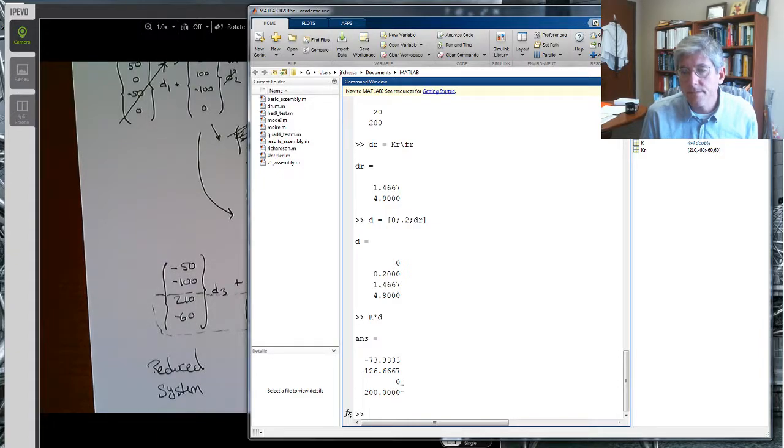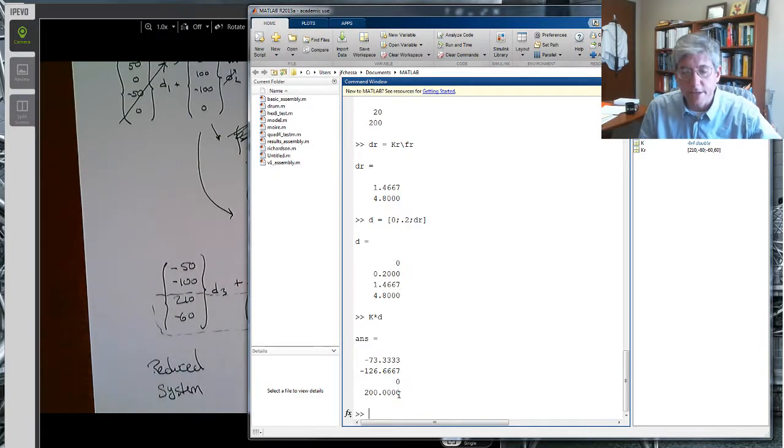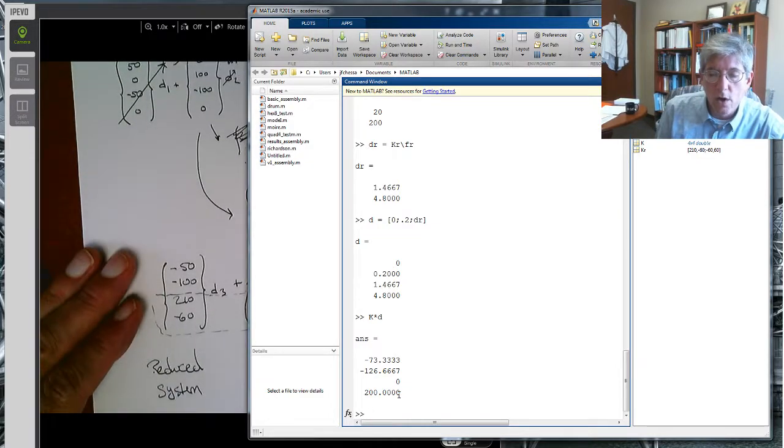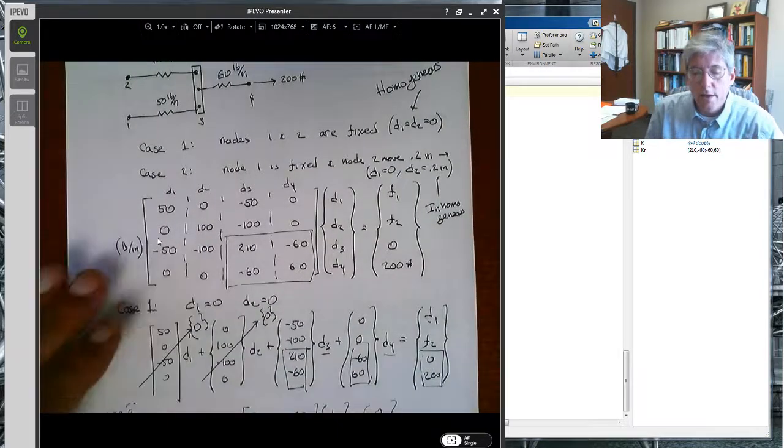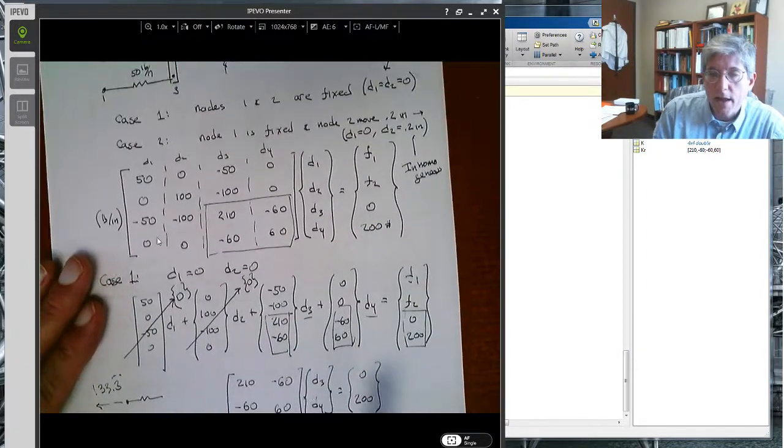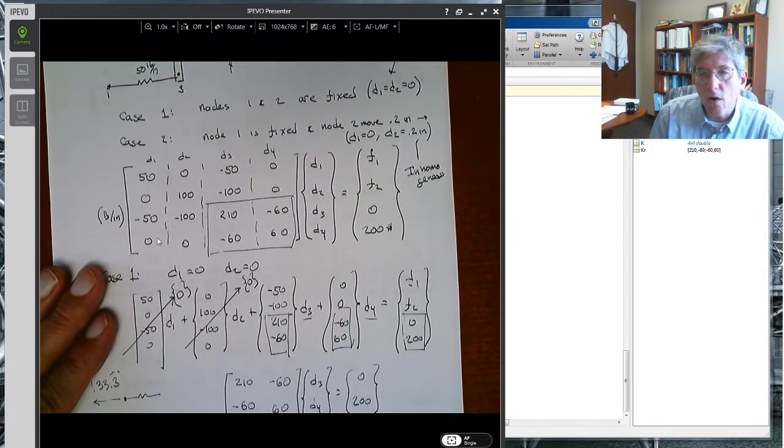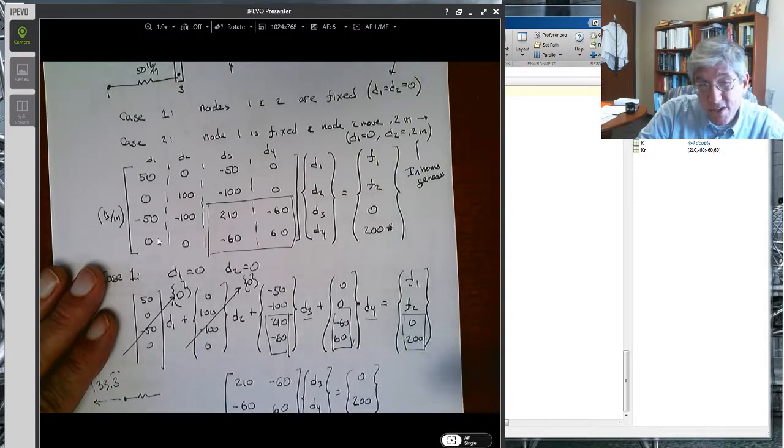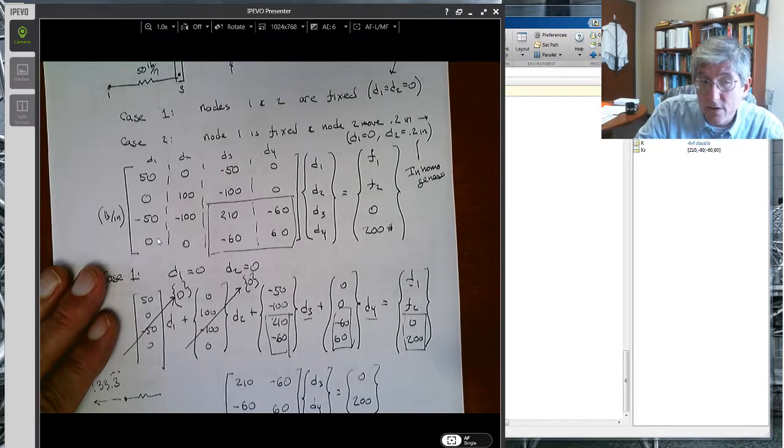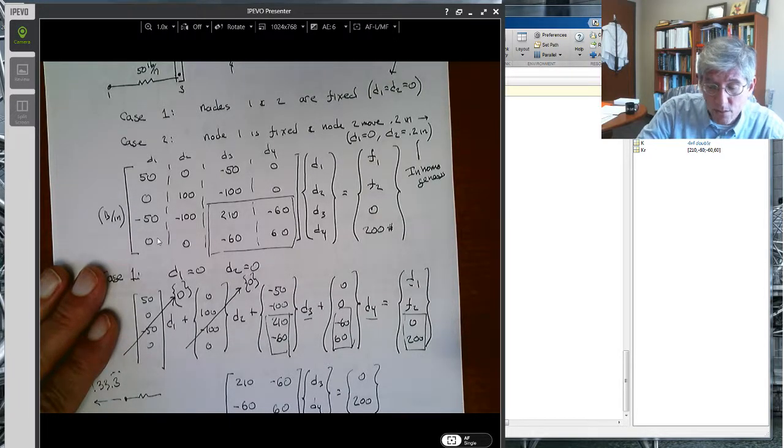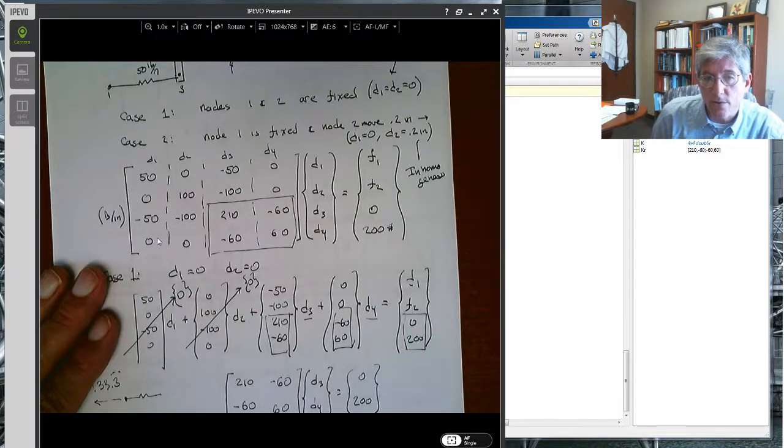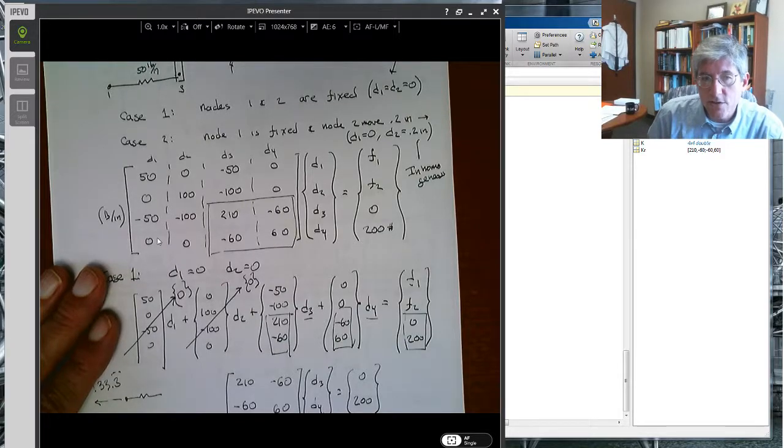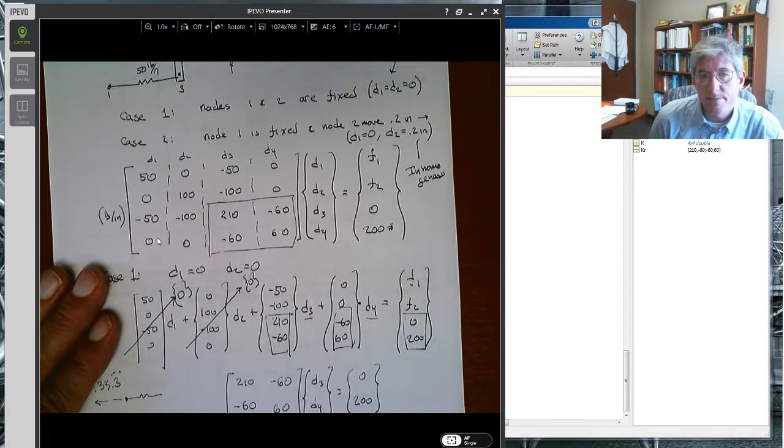All right, so that's pretty much it. Just to review, to summarize it really quickly, let's go back to this. You can think of it this way. If you have all zero displacement values, all homogeneous, which actually happens the majority of the times, usually you're prescribing displacements to be zero, it's quite easy. You just ignore all those columns and rows associated with those fixed degrees of freedom, and you solve the reduced system that's left.